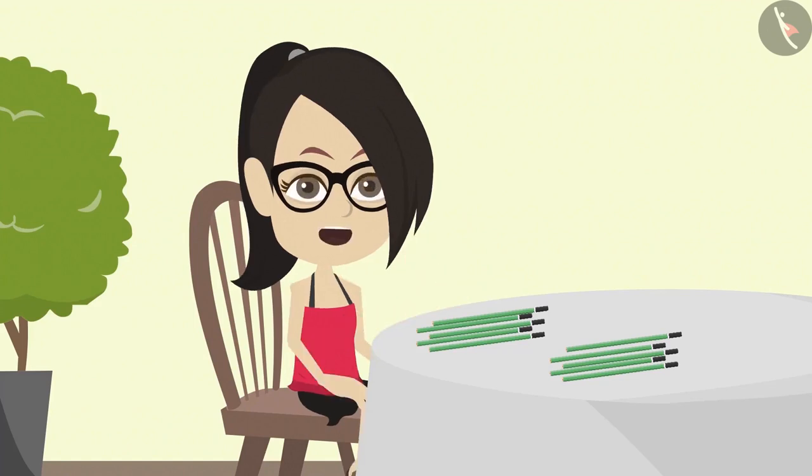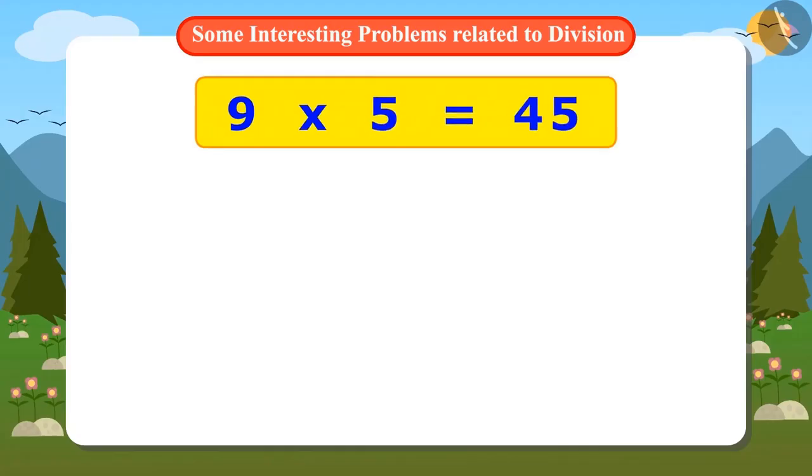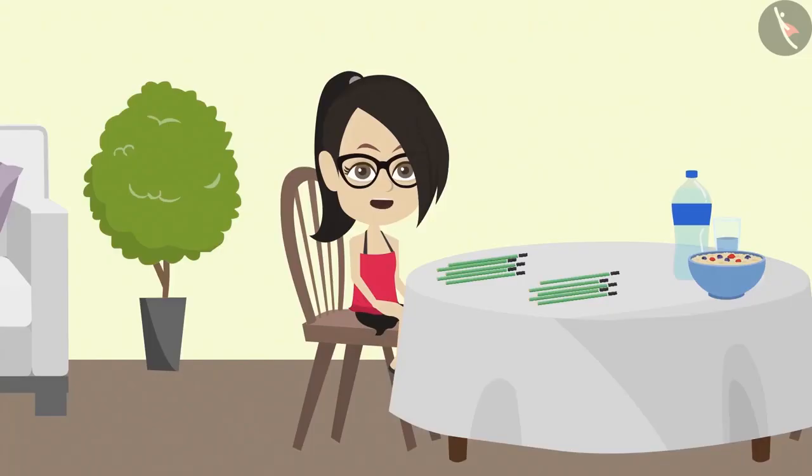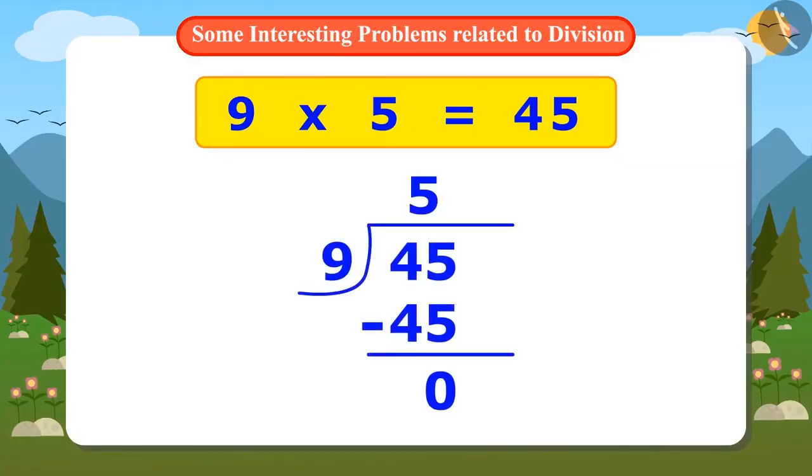I remember the multiplication table of nine. The nine fives are forty-five. This means that if among nine people forty-five pencils are to be divided, then everybody will get five pencils. This means the division method is easier.